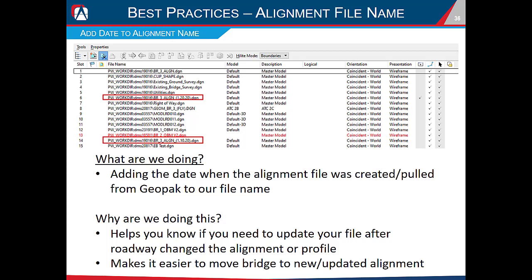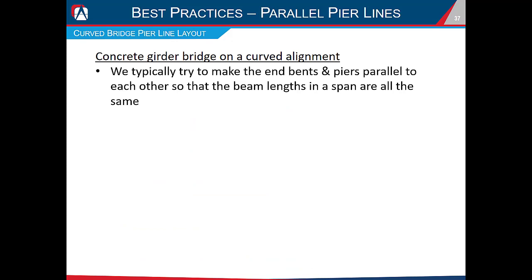Another best practice — especially useful in early project phases or design-build projects — is to add the date to the end of the alignment file name. The date should reflect when the alignment file was created and the data was pulled from the GeoPak file. This helps you know if you need to update your alignment file after roadway changes the alignment or profile, and makes it much easier to move the bridge to an updated alignment.